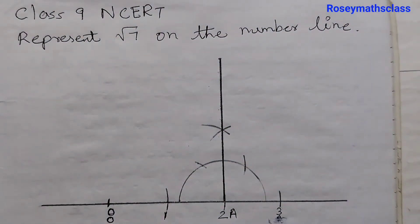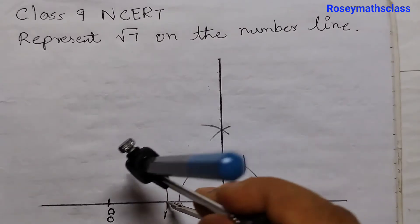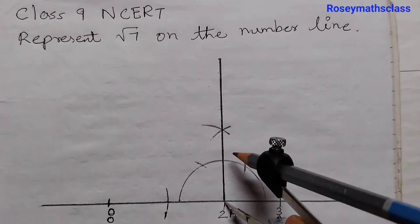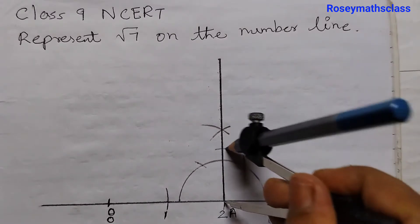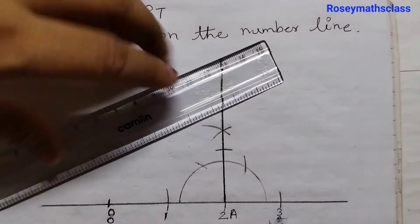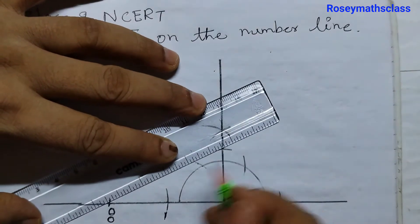Take 1 unit, that is from 0 to 1. Keep the metal point at A and cut an arc. So what we are doing is, here first we need to draw square root of 5.